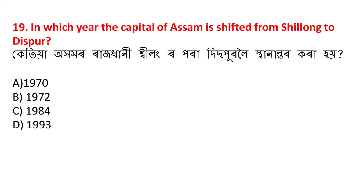In which year was the capital of Assam shifted from Shillong to Dispur? Ketya ahamor rajdhani Shilongar parah Dishpurolah shthanantar kara hoishishile. The answer is B - 1972.